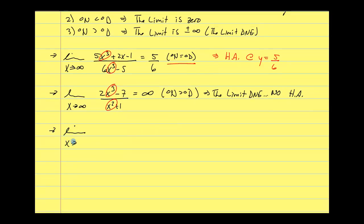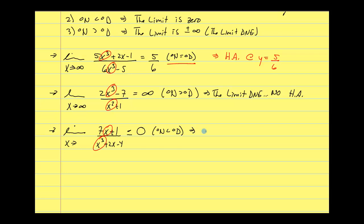Third case: the limit as x approaches infinity of 7x plus 1 over x cubed plus 2x minus 4. Comparing highest powers: x versus x cubed. The numerator goes toward infinity but the denominator goes much faster, so this goes toward 0 — the degree in the numerator is less than the degree in the denominator. This implies a horizontal asymptote at y equals 0. You can see how much faster these shortcut rules make these problems.